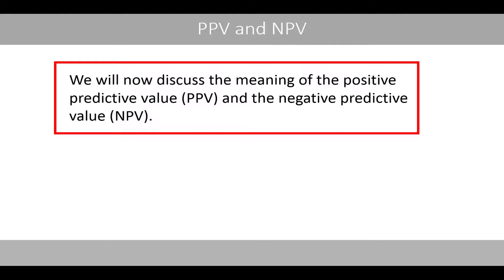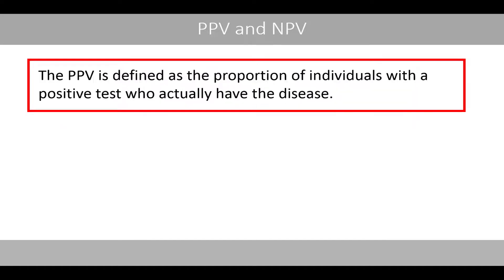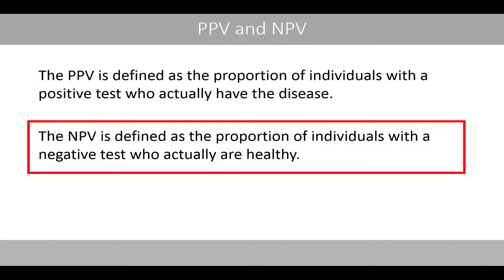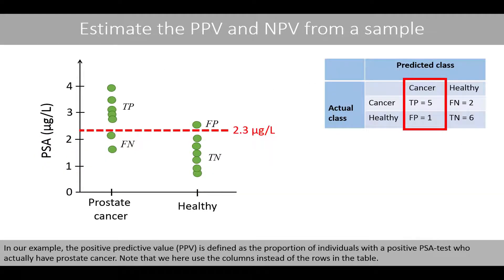We will now discuss the meaning of the positive predictive value and the negative predictive value. The positive predictive value is defined as the proportion of individuals with a positive test who actually have the disease, whereas the negative predictive value is defined as the proportion of individuals with a negative test who actually are healthy. In our example, the positive predictive value is the proportion of individuals with a positive PSA test who actually have prostate cancer.